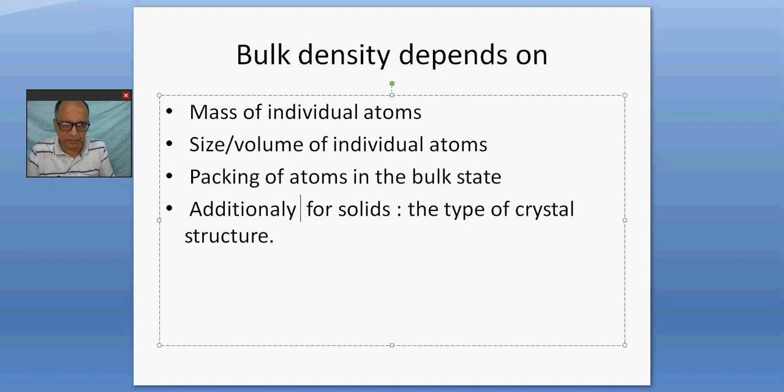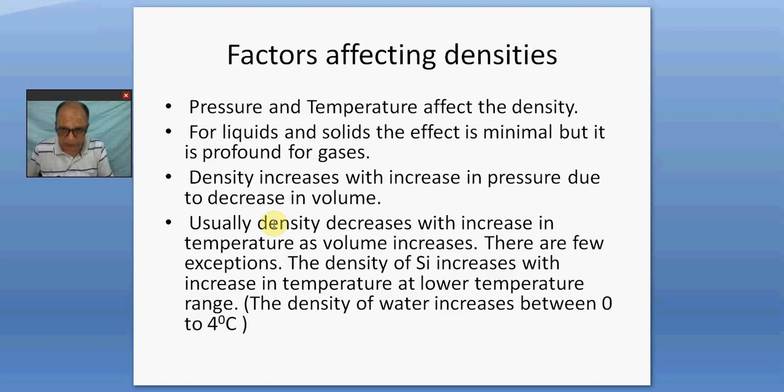Just like in the case of melting point and boiling point, the melting point and boiling point, the sole determinant was the metallic bond strength, mostly, in addition to the type of crystal structures and the packing efficiency and all that. But here, the metallic bond strength has little to do with density. It is the mass of the individual atom, the size of the individual atom, and the packing - how they are closely packed or loosely packed, or if they're gases, they are scattered. And for solids, the type of crystal structures.